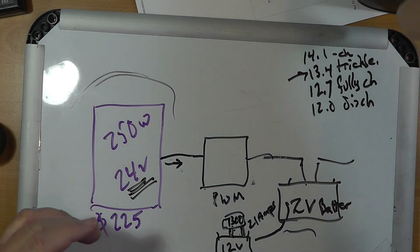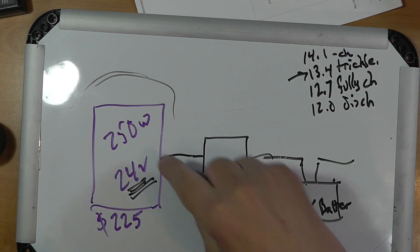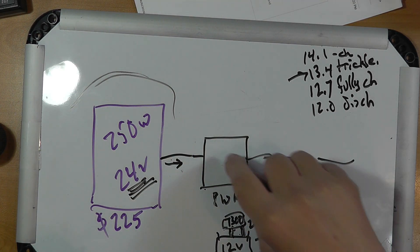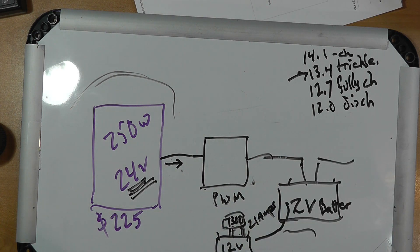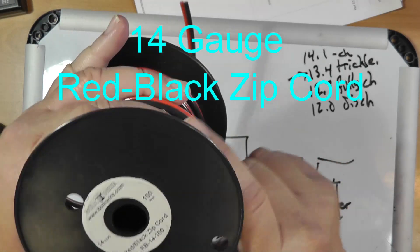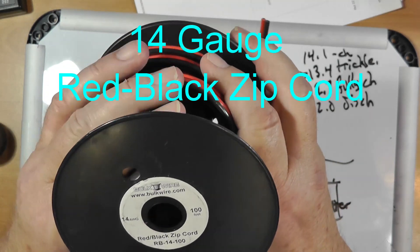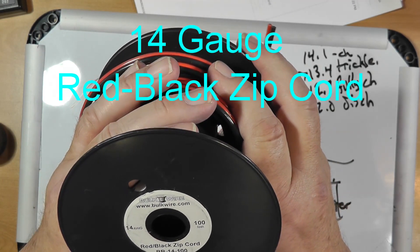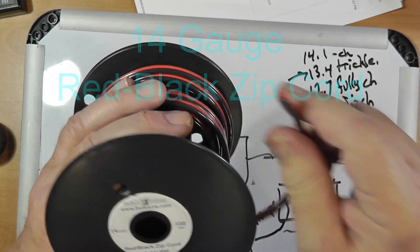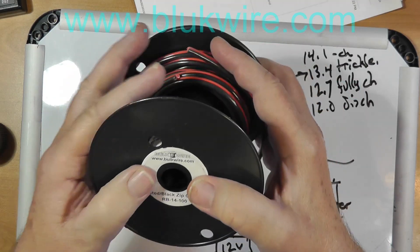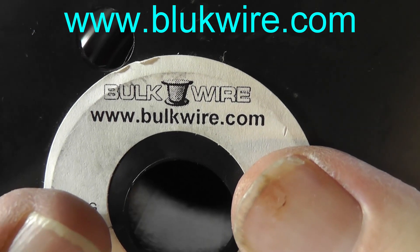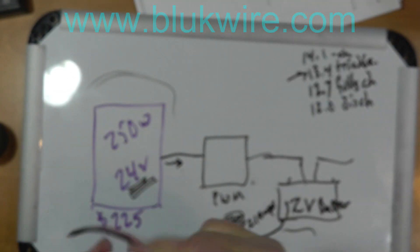Now, he asked what wire I use. This is the wire that runs from the panel to the charge controller to the battery. This is 14-gauge red-black zip cord, stranded, and it's got 100 feet of it. And I got this from www.bulkwire.com.